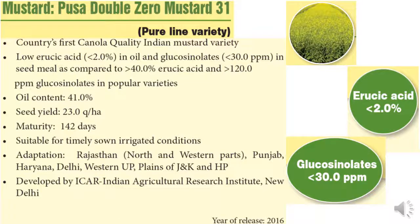The second recently released variety is Pusa 00 Mustard 31, also a pure line variety having erucic acid less than 2% and glucosinolate less than 30 ppm.